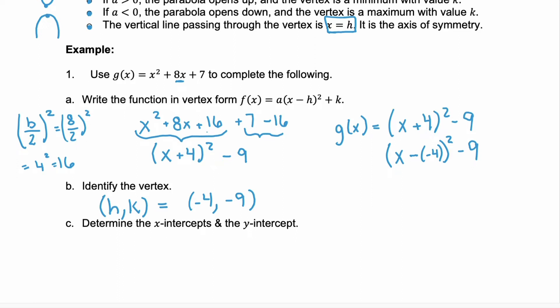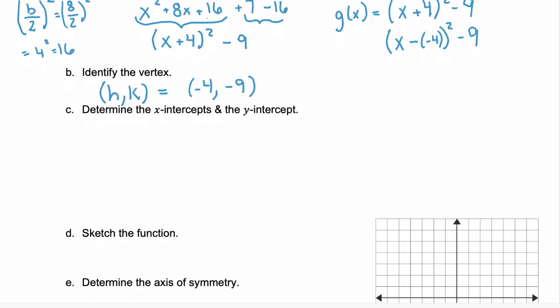Now in part c, we're going to find the x intercepts and the y intercept. The x intercepts are when y equals 0. So we're taking our function g of x and finding out when it's equal to 0. So take that vertex form, x plus 4 squared minus 9 equal to 0, and solve it for x. Add 9 to both sides. Now we need to take the square root of both sides. x plus 4 equals plus or minus the square root of 9.